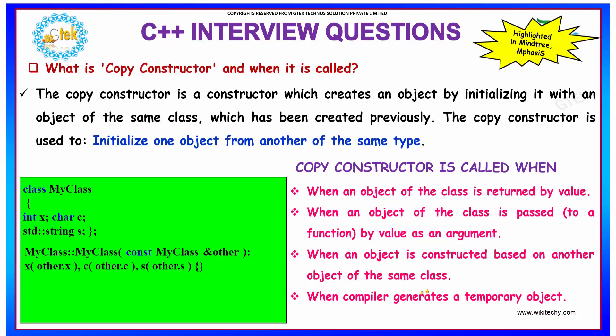What is meant by copy constructor and when it is called? Copy constructor is a constructor which creates an object by initializing it with the objects of the same class which has been created previously. Copy constructor is used to initialize one object from another of the same type.